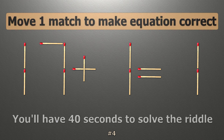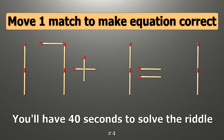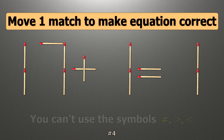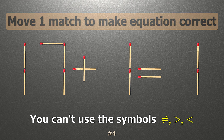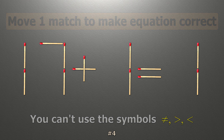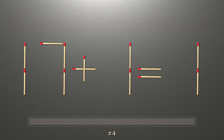We have the equality 17 plus 1 equals 1. Our equality is wrong. We need to move one match to make our equality correct.